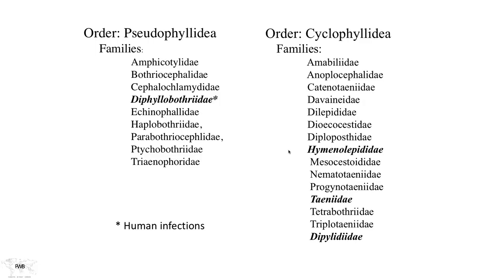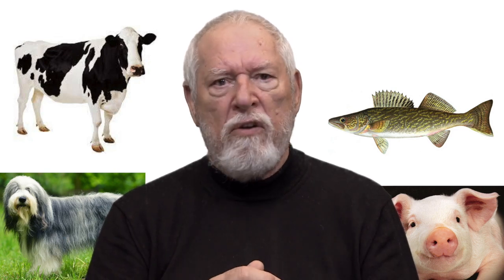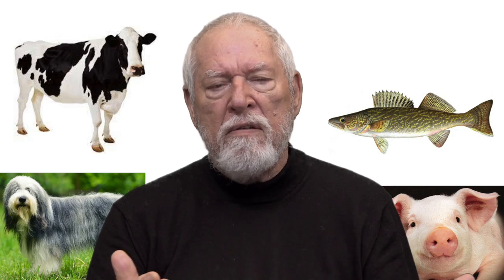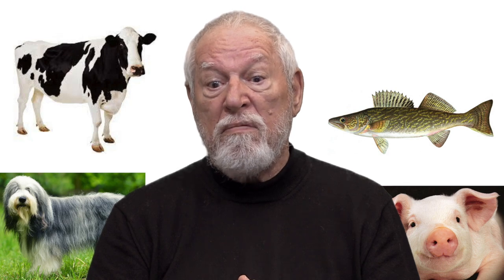There are 24 different families that encompass tapeworms all over the world, yet only four of those contain organisms which humans can acquire through the ingestion of various foodstuffs. Their life cycles are very interesting and very complex, and yet there are many, many people out there that are infected with these organisms.